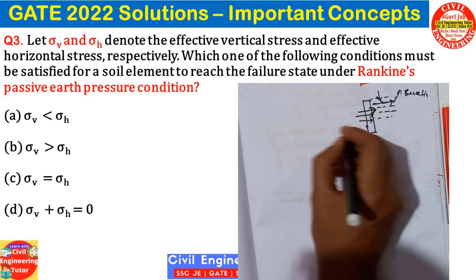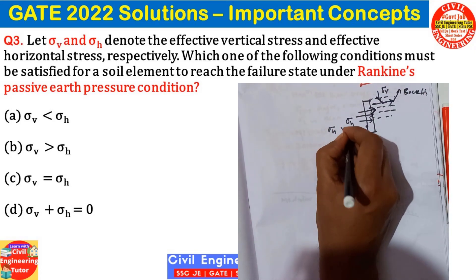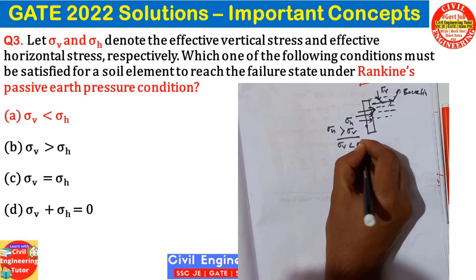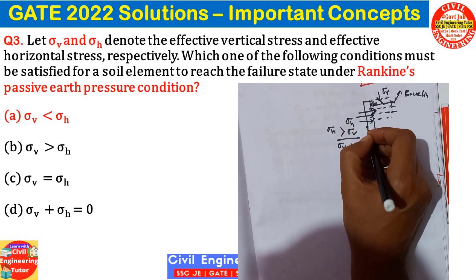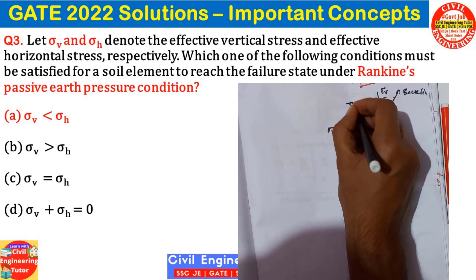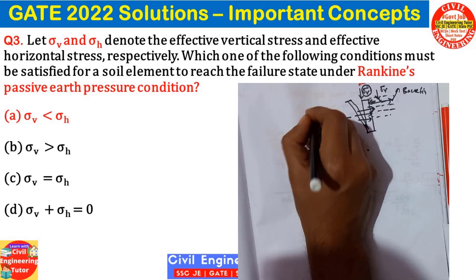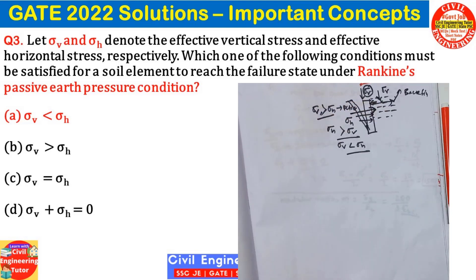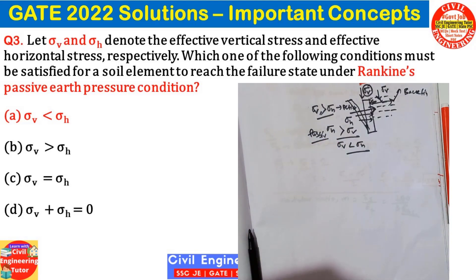In the case of Rankine's passive earth pressure, sigma H is greater than sigma V. So the correct option is A: sigma V less than sigma H. For the active pressure condition, the backfill pushes the retaining wall, causing it to fail outward. In the active case, sigma vertical has a higher value than sigma horizontal. Active state: sigma V greater than sigma H. Passive state: sigma H greater than sigma V.